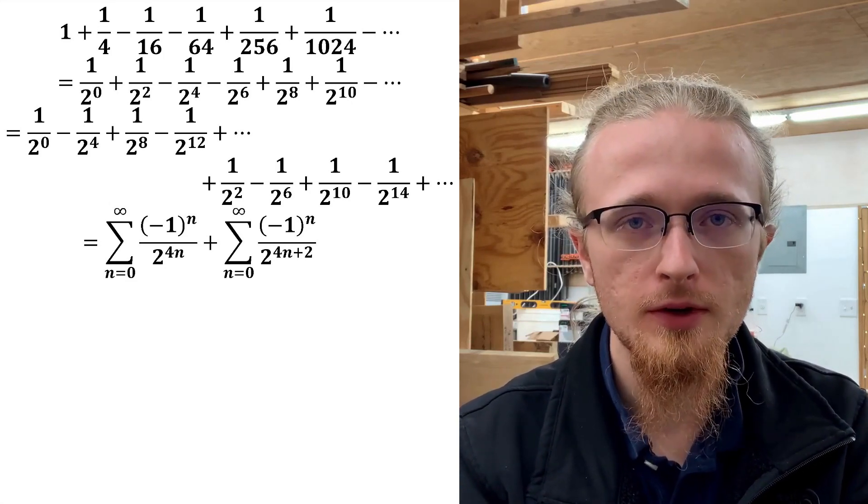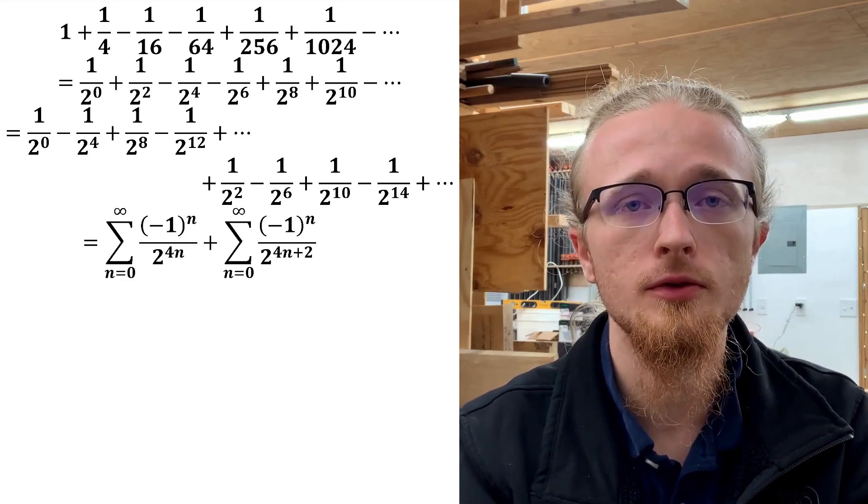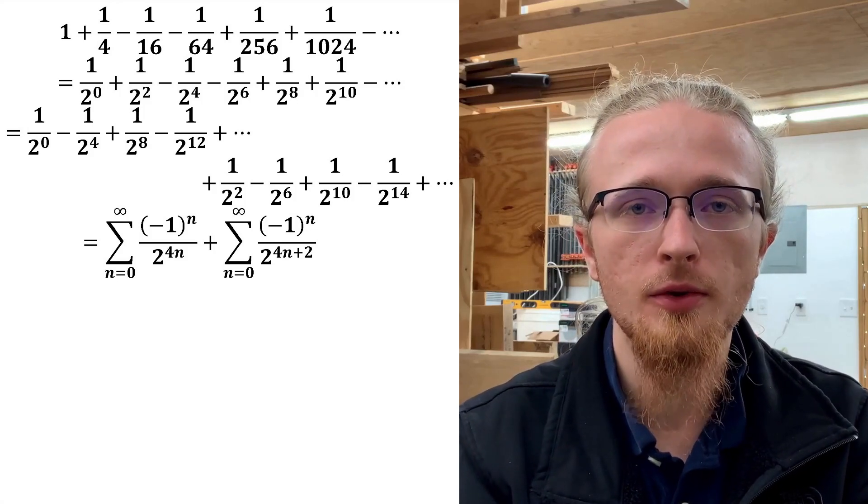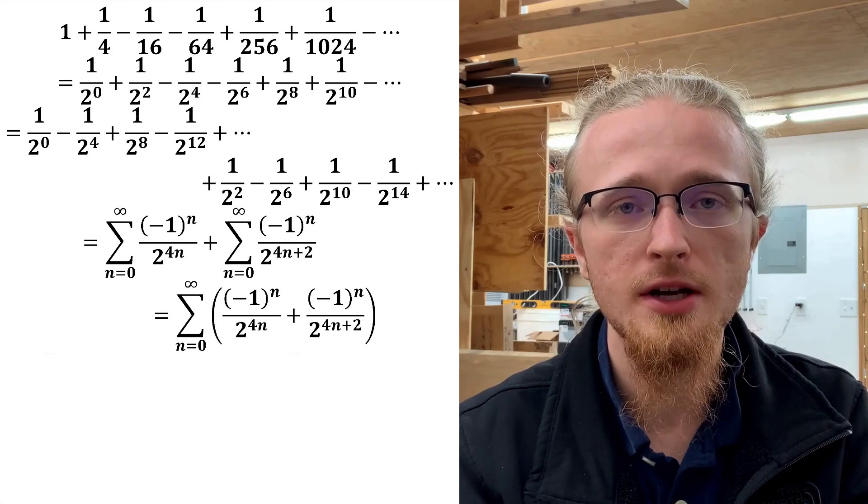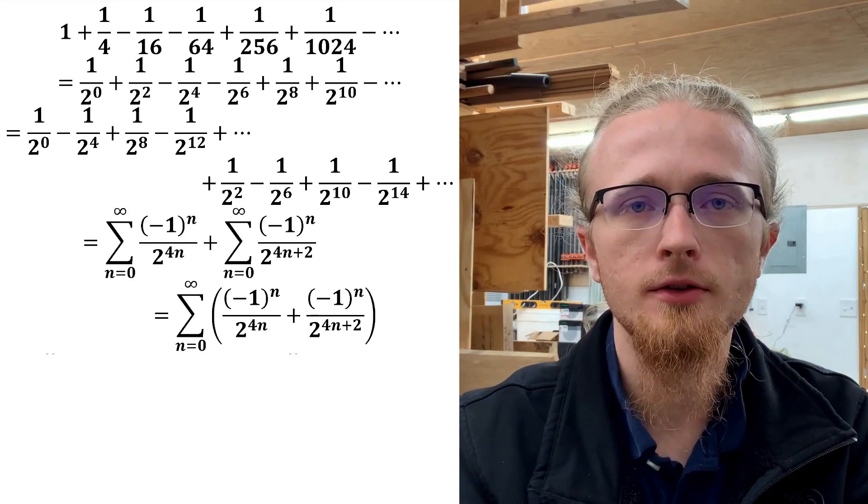The only difference between the two series is, of course, that there's a 4n as the exponent on the 2 in the first series, and a 4n plus 2 as the exponent on the 2 in the second series. We can then factor out the summation symbol without changing the value of the series, and start simplifying the expression under the sum.